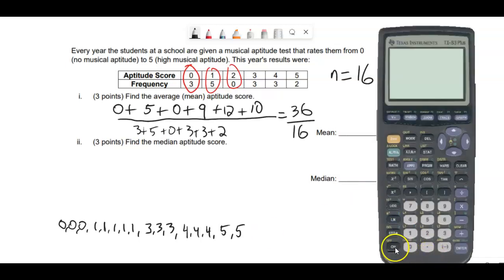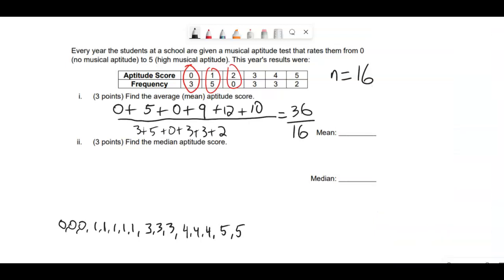Over sixteen. Now this, of course, we would verify with the calculator, and dividing by sixteen gives two point two five. So that's the mean.